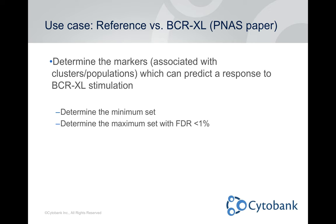That first paper has an accompanying dataset, and we have this data on our servers for you to try out Citrus with. Essentially it's PBMCs — eight samples are unstimulated and eight are stimulated with B-cell receptor cross-linking. This is a good time to mention that Citrus needs at least eight samples per group in order to have enough statistical power to be confident in the results. You can try it with less, but that makes the results a little more uncertain, so keep that in mind.